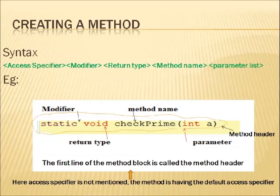Here you can see the syntax for creating a method. The syntax requires an access specifier, modifier, return type, method name, and parameter list. In order to declare or create a method or a function we need to follow this syntax. In this example, it starts with the modifier static, then void as the return type, then checkPrime as the method name, and in the bracket that is called the parameter list. The first line of the method block is called the method header.